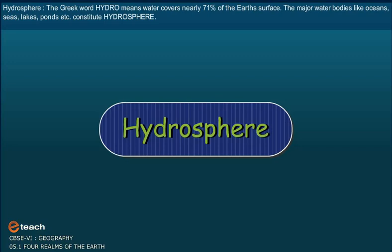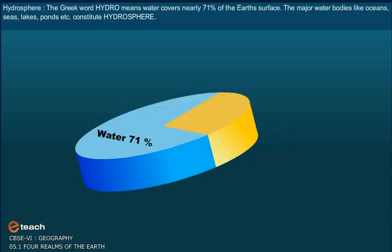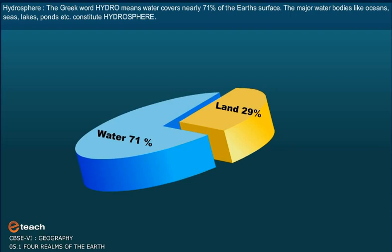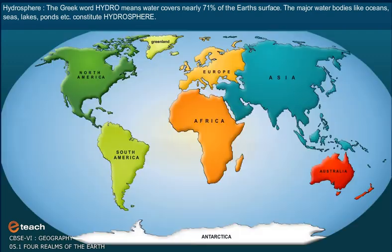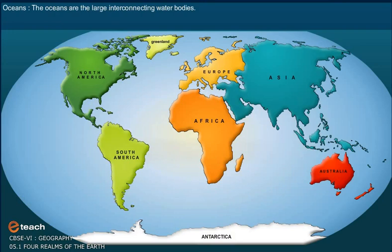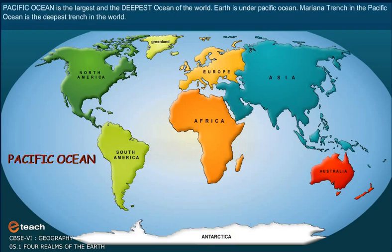The Greek word 'hydro' means water. Hydrosphere covers nearly 71% of the Earth's surface. The major water bodies like oceans, seas, lakes, ponds, etc., constitute the hydrosphere. The oceans are large interconnected water bodies. The Pacific Ocean is the largest and deepest ocean of the world. The Mariana Trench in the Pacific Ocean is the deepest trench in the world.